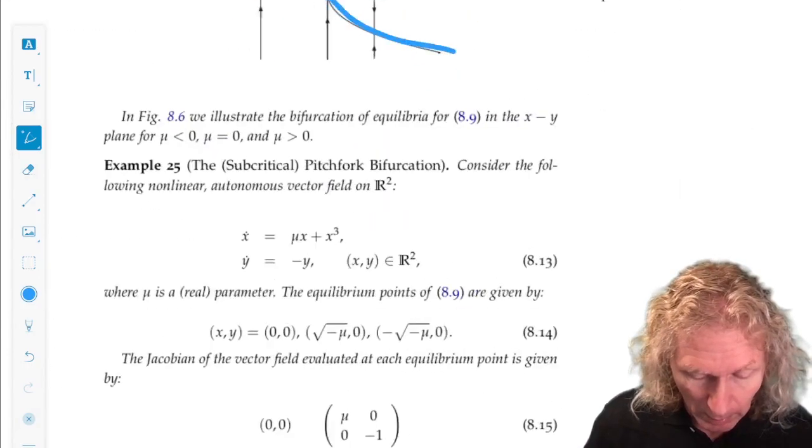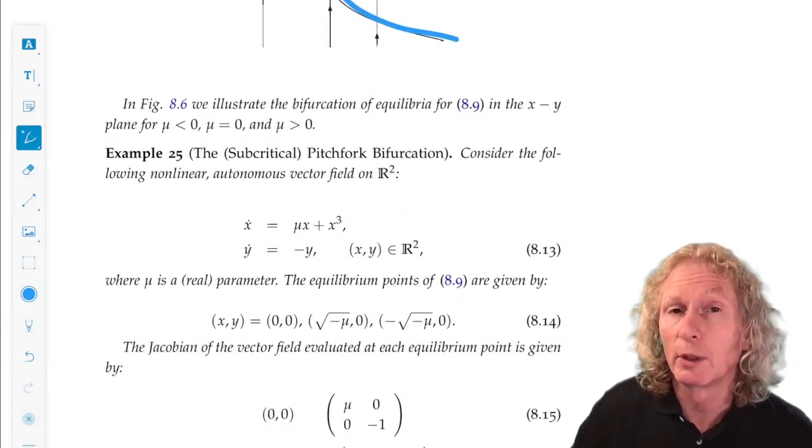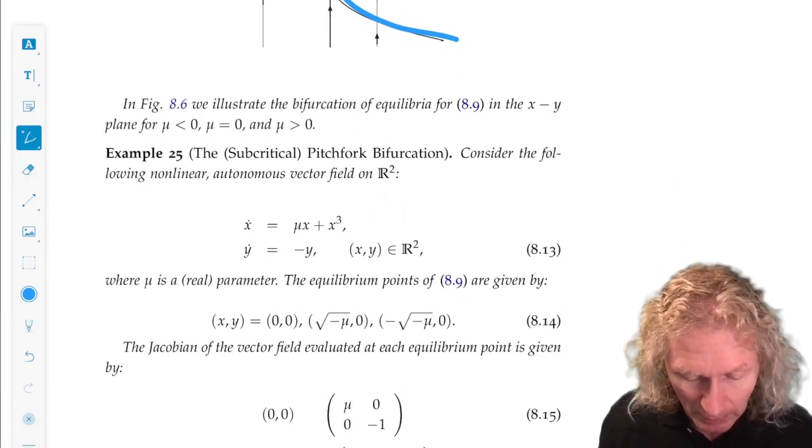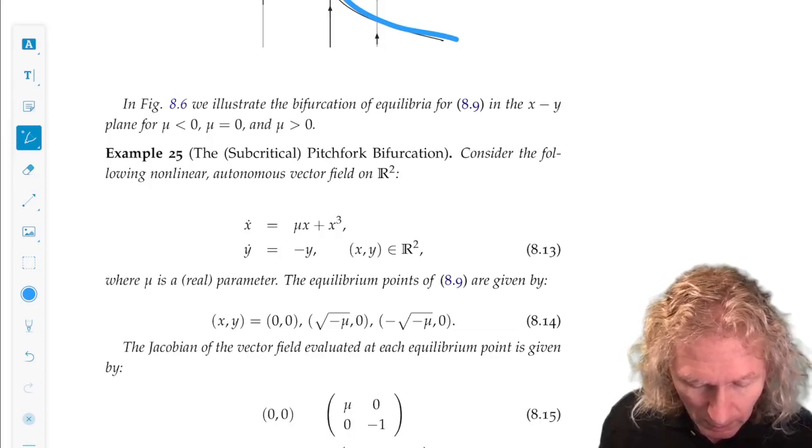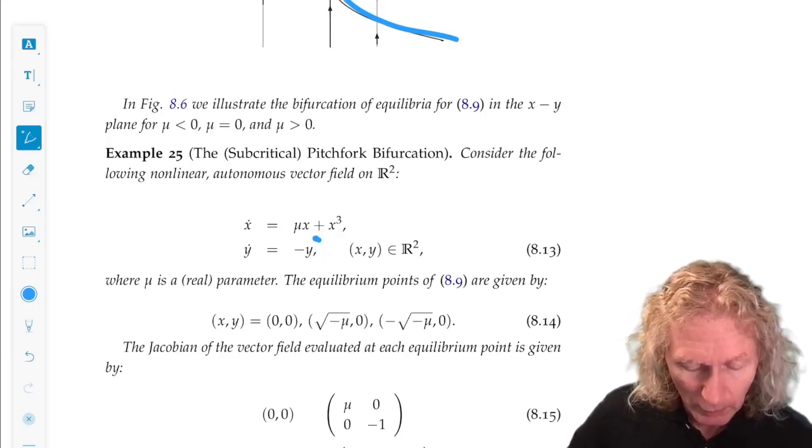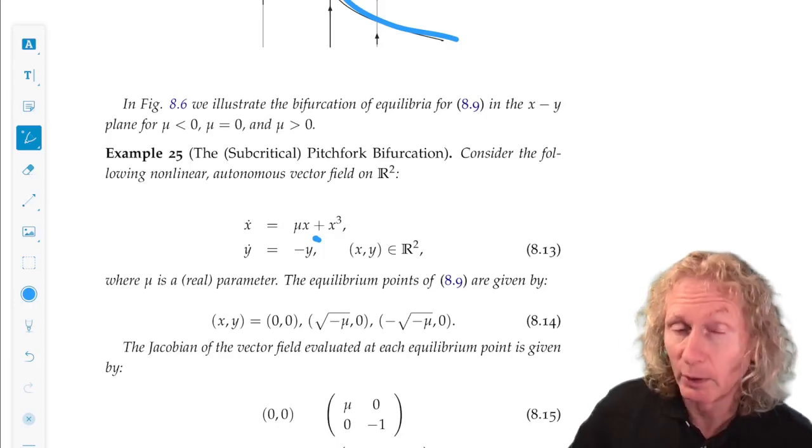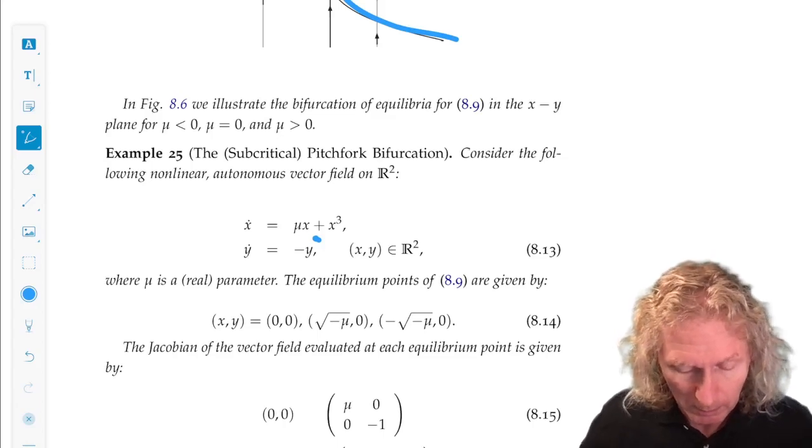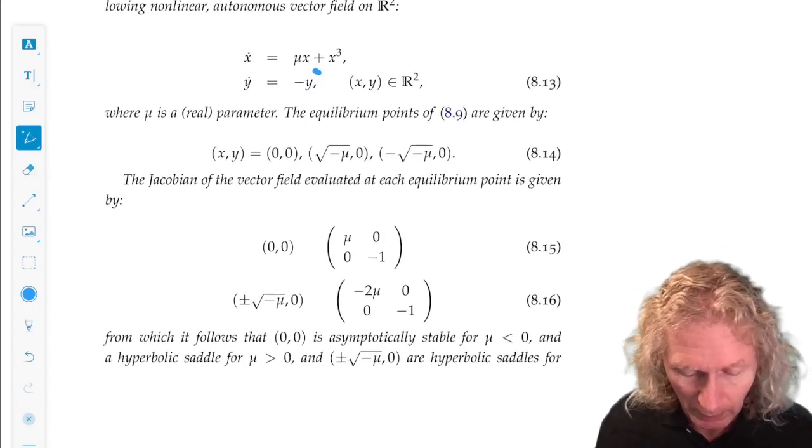Okay, now we're going to consider the subcritical pitchfork bifurcation. The difference is, we have a minus sign here in the x component. Still, for equilibria, we have x equals 0 is always in equilibrium. Y has to be 0 in this case.